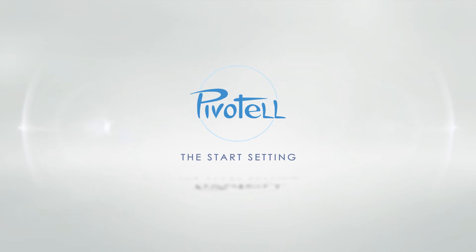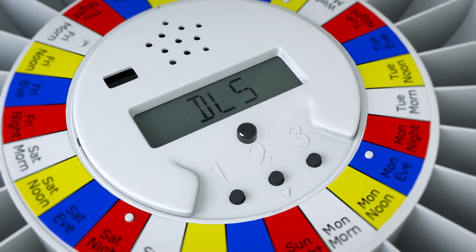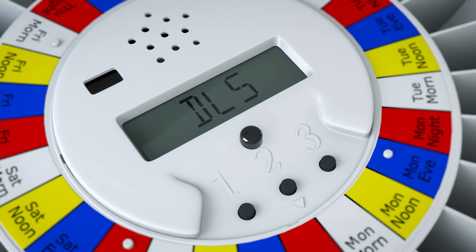The start setting allows you to delay the start of the dispensing cycle until a future day and time. This is very useful for pharmacists who may pre-fill the dispenser in advance. If start delay is not required, set to a date in the recent past.